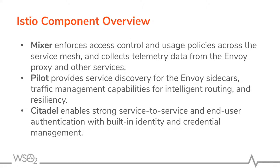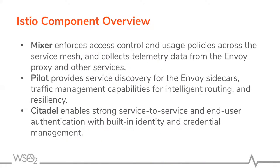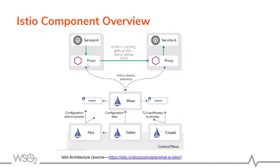Let's discuss the Istio component overview. With Istio, we have different services and each service is bound with a proxy that handles incoming and outgoing traffic for that particular service. The proxy communicates with the Mixer. Mixer is responsible for policy enforcement, access control, usage policies, and collecting telemetry — all this happens at the Mixer side. When a call comes in, the proxy records certain information including headers and other data, and informs Mixer of the request.